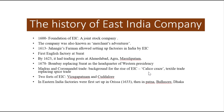Textiles were coming up as a major commodity in this early modern period. The two main East India Company forts in south India were Vizagapatnam and Cudalore. In eastern India they were also setting up factories — in Orissa in 1633, and then in Patna, Barasat, Dhaka, and other cities.